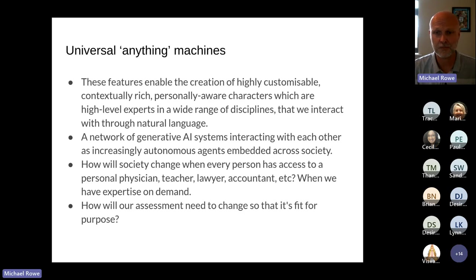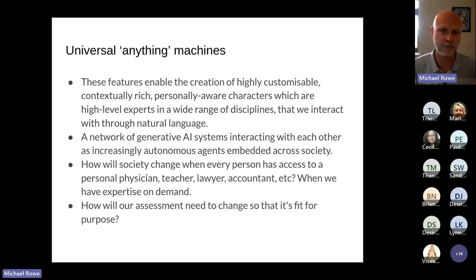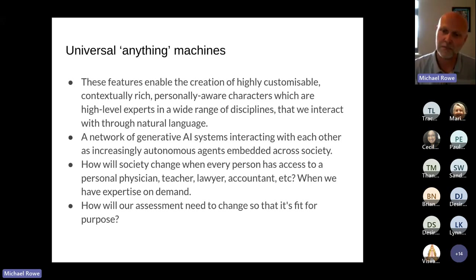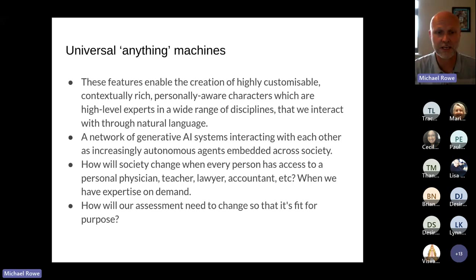We're already starting to see ecosystems of generative AI systems interacting with each other. When ChatGPT was first launched it didn't understand images. Now we're seeing multi-modality — language models very good at text interacting with language models very good at images, video, and audio. When these increasingly autonomous agents start interacting with each other, it will complicate things significantly. How does society change when every person has access to a personal physician, teacher, lawyer, and accountant — all this expertise on demand? And how do we change assessment to be fit for purpose in that society?